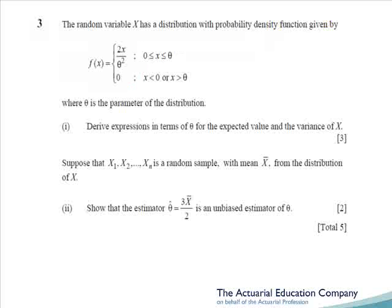On to question three. Here we're asked to find the expected value, i.e. the mean, and the variance of an unknown distribution. It's just working them out from first principles — the mean of x is going to be the integral of x times the PDF of x over the full range. You'll notice that the range is from zero to theta. Integration is not too bad, so fairly straightforward.